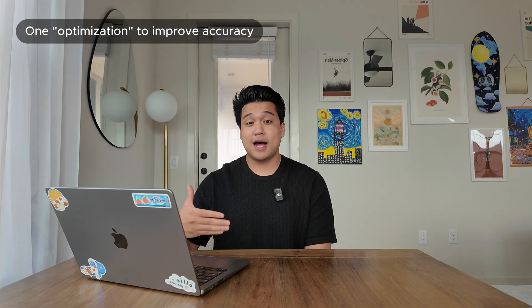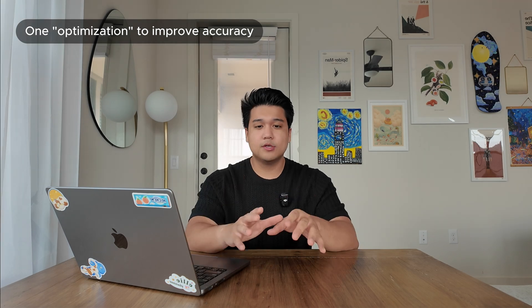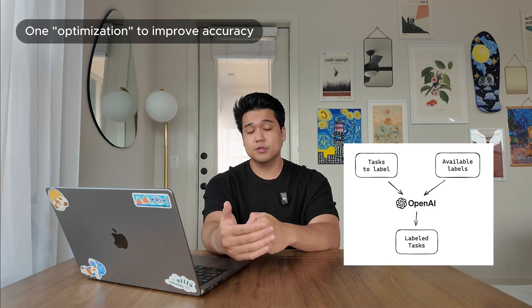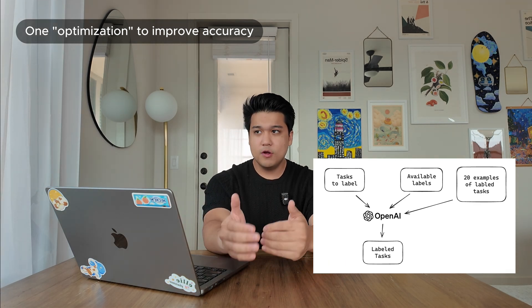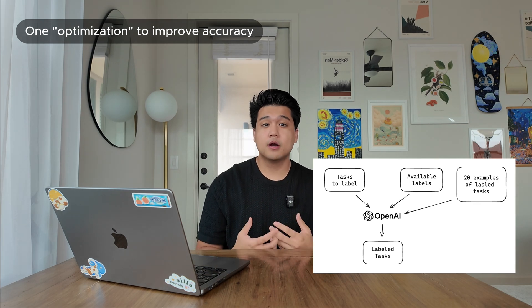I knew that if I just said 'here are the tasks and labels, go match them,' the results probably wouldn't be great — maybe it doesn't know what 'admin work' means. One thing you can do to give it the highest chance of picking the right labels is to give it some context. So along with the tasks and labels, I'd also feed it 20 examples of my past labeled tasks. With that context, and GPT-4 being pretty smart, I thought it'd do a good job returning labels. The plan was just to build an API endpoint that does that.